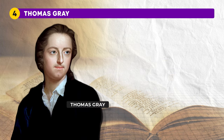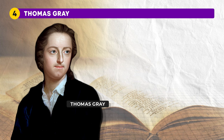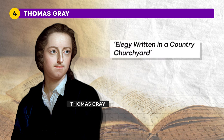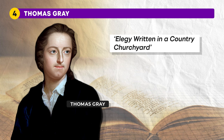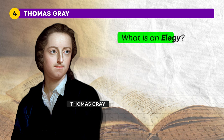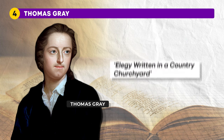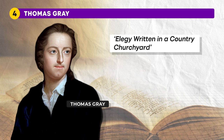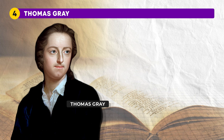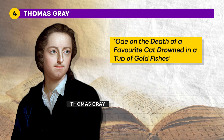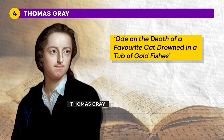Then we have Thomas Gray, an English poet and scholar who gained fame primarily for his poem Elegy Written in a Country Churchyard. An elegy in English literature is a poem of serious reflection — usually a poem that laments for the dead. Thomas Gray's Elegy Written in a Country Churchyard was published in 1751. He published 13 poems during his lifetime and apart from serious poetry, he also wrote humorous pieces, such as Ode on the Death of a Favourite Cat Drowned in a Tub of Gold Fishes.